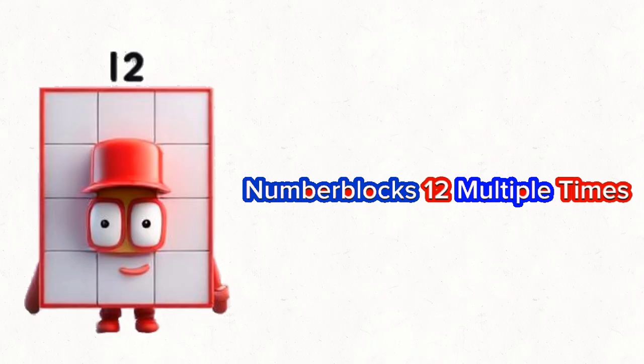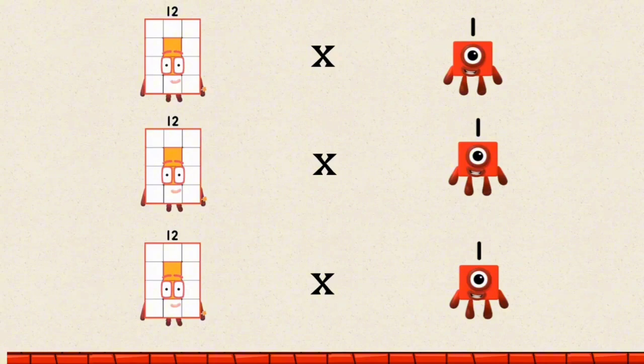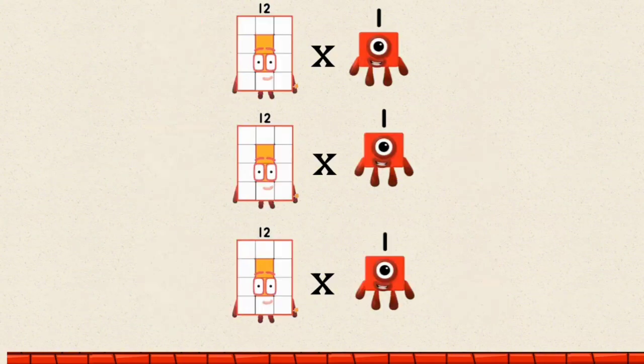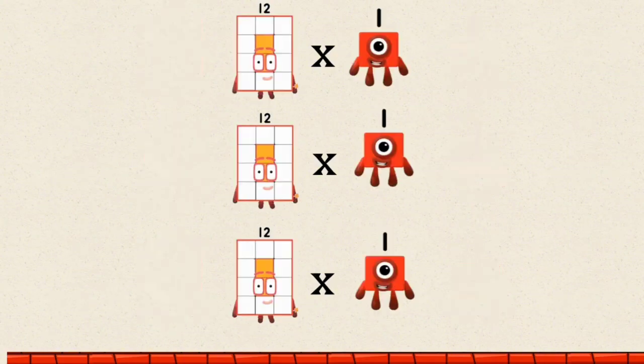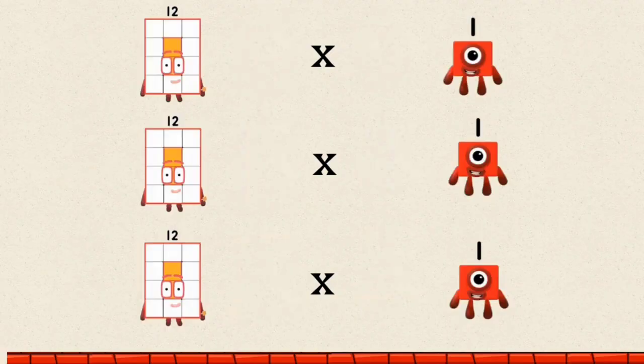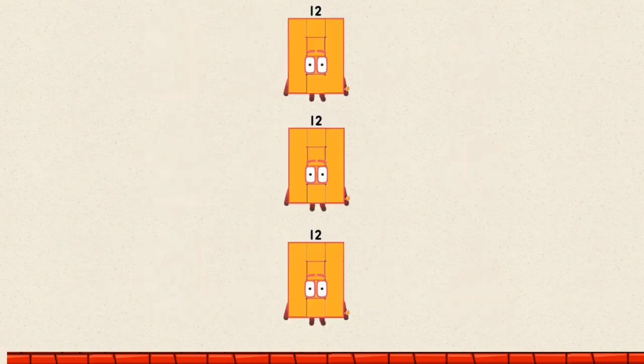Number Blocks 12 multiple times. 12 times 1 by a multiple of 3 equals 12.